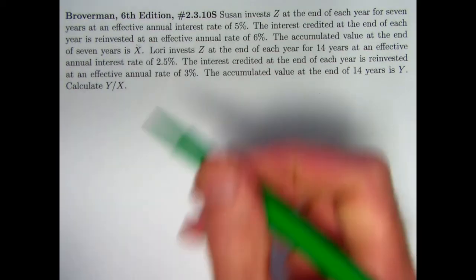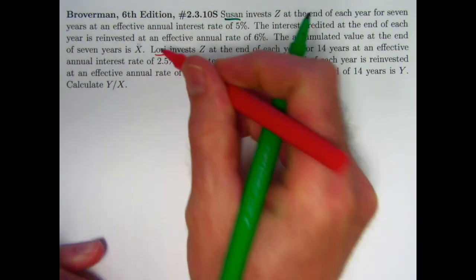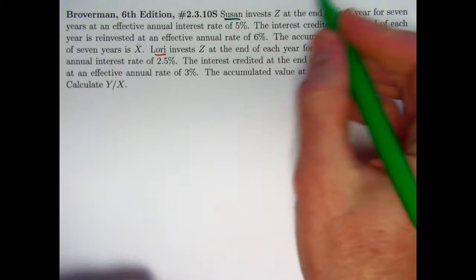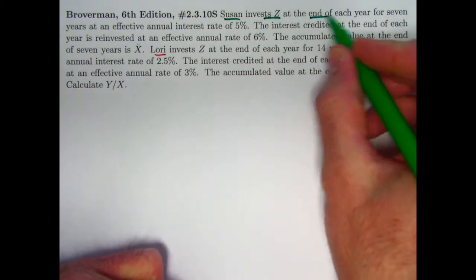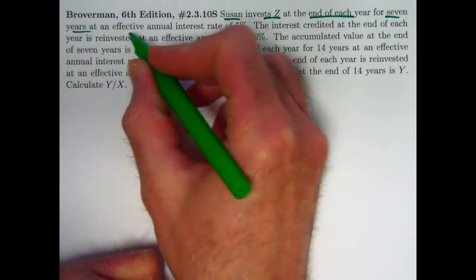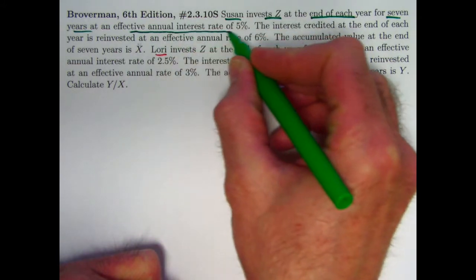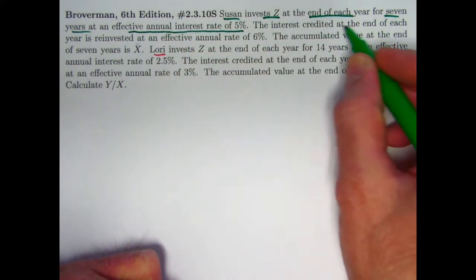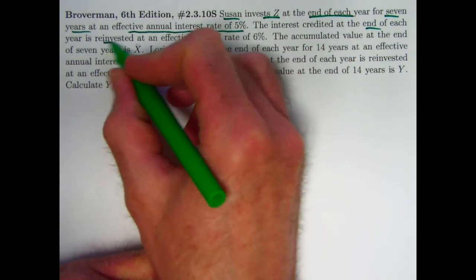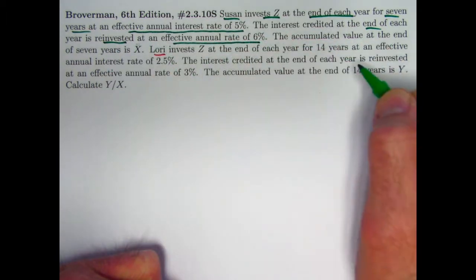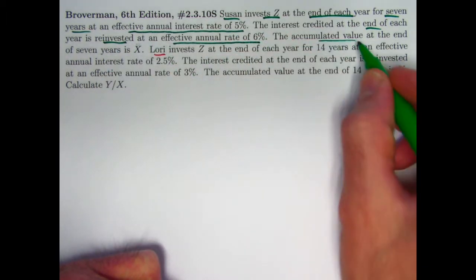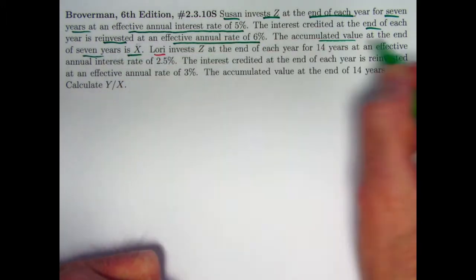So we've got two people: Susan and Lori. Susan invests Z at the end of each year for seven years in an account with an effective annual interest rate of 5%. Interest credited at the end of each year is reinvested in a new account with an effective annual rate of 6%. The accumulated value at the end of seven years is X.